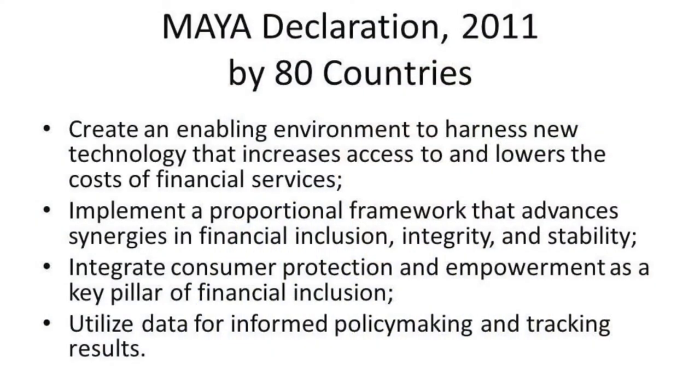The emergence of microfinance, community banks, and cell phone groups have added a new dimension to rural finance. Many countries have adopted a proactive approach towards financial inclusion. During 2011, more than 80 countries came together in Mexico and signed a declaration called the Maya Declaration, whereby they agreed to create an enabling environment to harness new technology that increases access to and lowers the cost of financial services, financial inclusion, integrity, and stability — integrating consumer protection and empowerment as a key pillar of financial inclusion, and utilizing data for informed policy-making and tracking results. Such a process of financial inclusion is expected to enhance the entrepreneurial qualities of the rural poor and help them achieve a better quality of life.